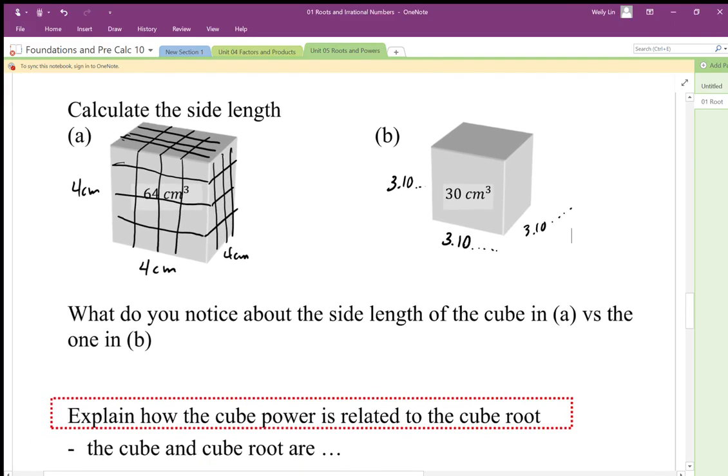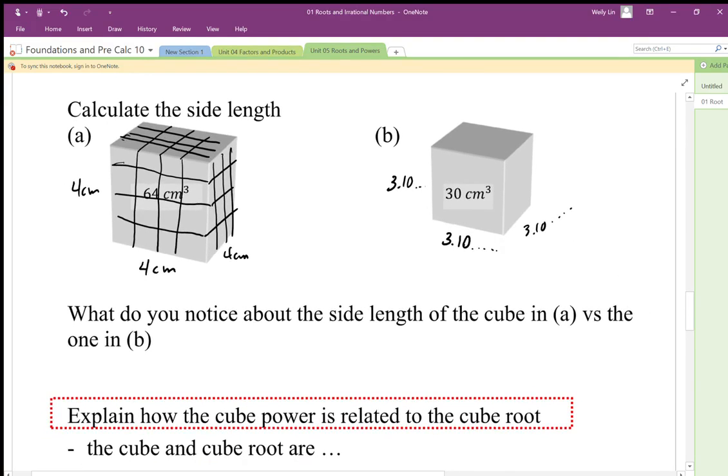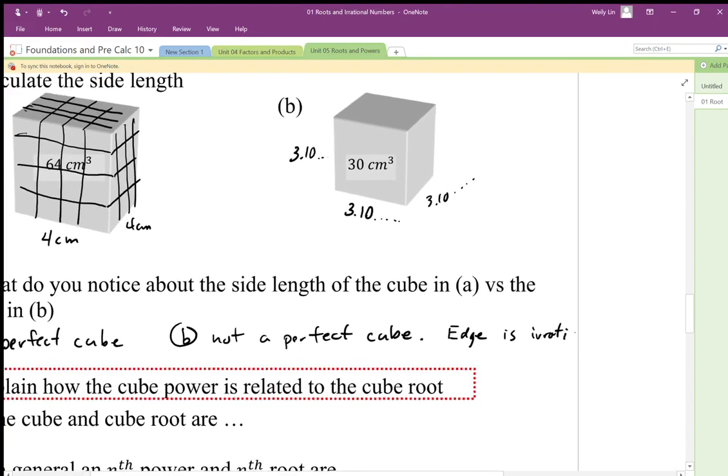So the edge length of cube in A versus one in B is, one in A I could draw out because it's a perfect cube. So A is a perfect cube, B is not. And when I actually work this out, the edge length is irrational. An irrational number because it is not made from a perfect cube.